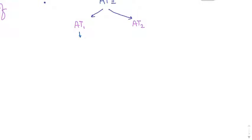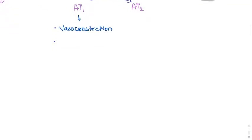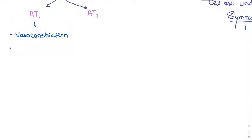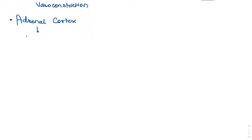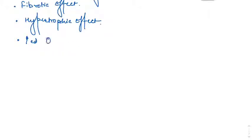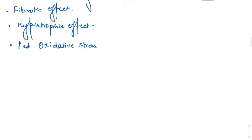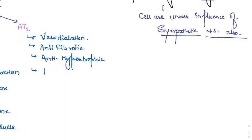The actions mediated by angiotensin 1 receptors include vasoconstriction — angiotensin 2 is a very potent vasoconstrictor. It also causes direct renal vasoconstriction. At the adrenal cortex, it leads to increased aldosterone release, which causes increased sodium and water retention. It also has fibrotic and hypertrophic effects and increases oxidative stress.